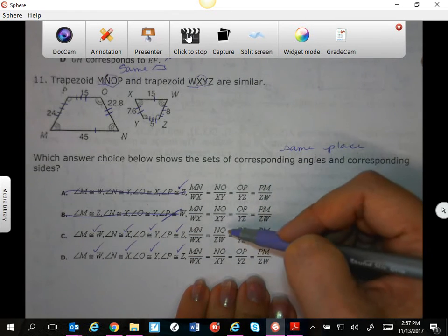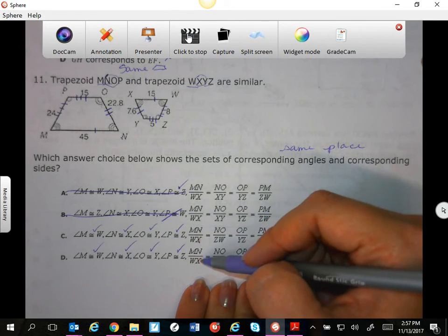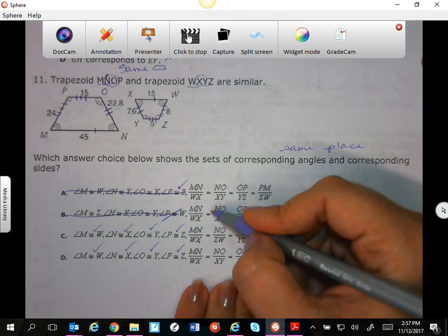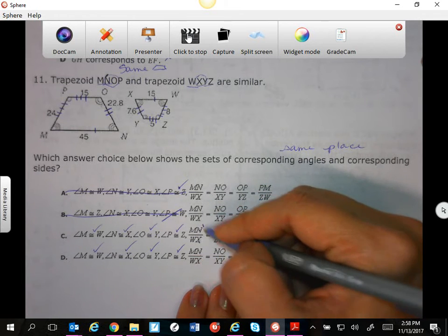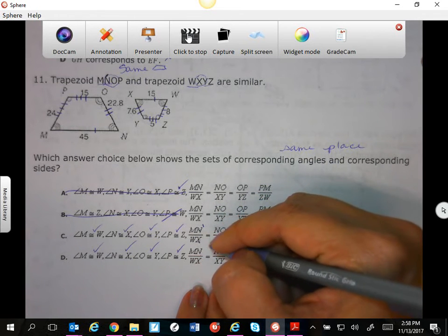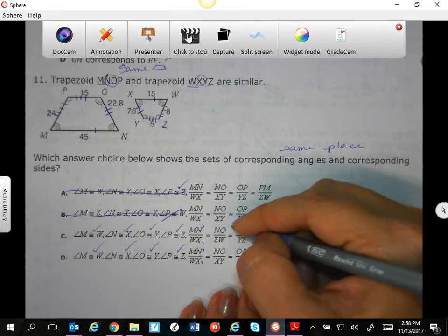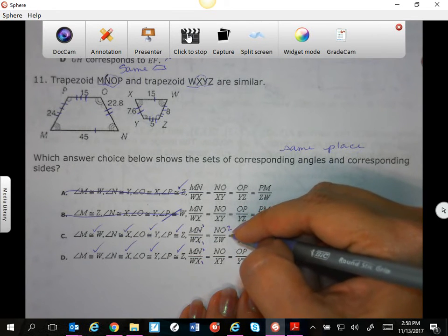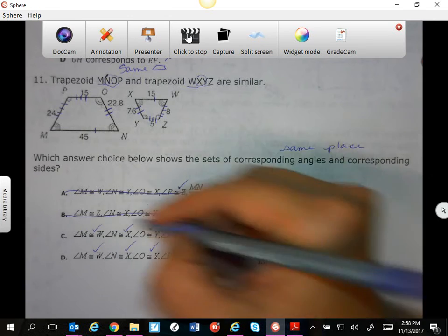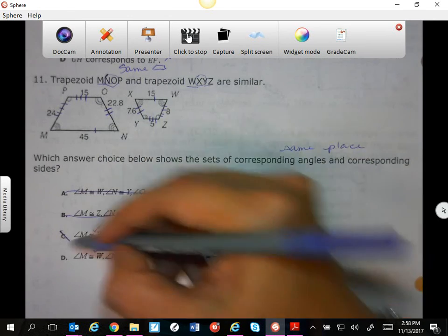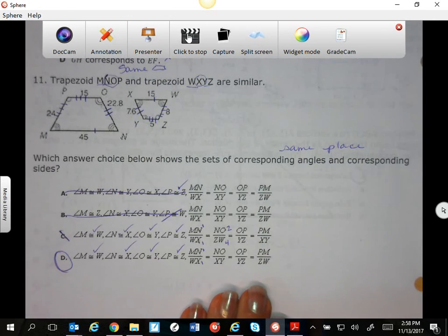This is the same. MN and WX—yes, those are true because those are both labeled 1. NO is a 2, and ZW is a 4, so it cannot be this one. So that leaves C. Make sure you study.